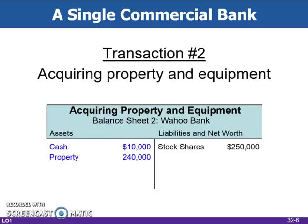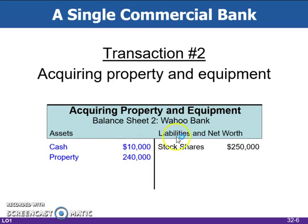The next step is the business needs to acquire a building and some equipment for cash. This did not affect the total net worth of the bank, but was rather an exchange of one asset for another asset, so this occurs on one side. Notice assets still has $250,000, and liabilities and net worth also has $250,000.